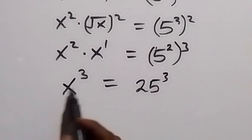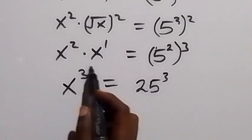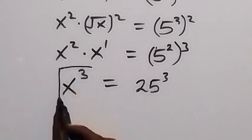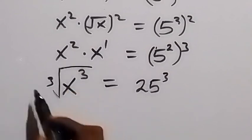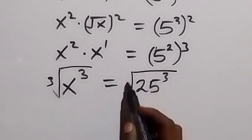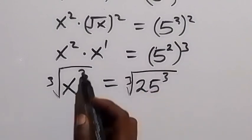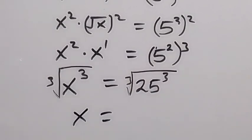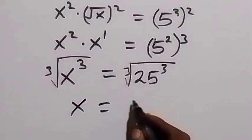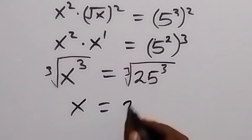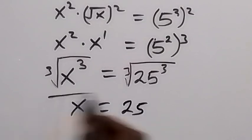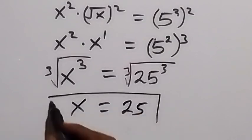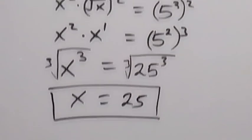We have power of 3 on both sides. When we take the cube root on both sides, the cube root cancels and we have x here. Same thing on the right side — cube root cancels — and we have x equals to 25.